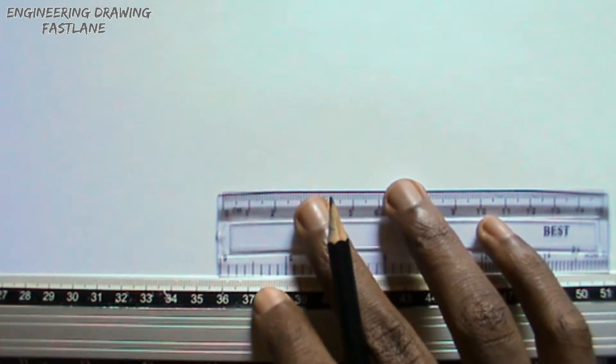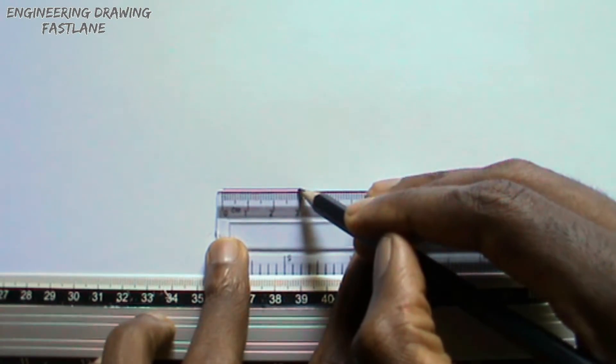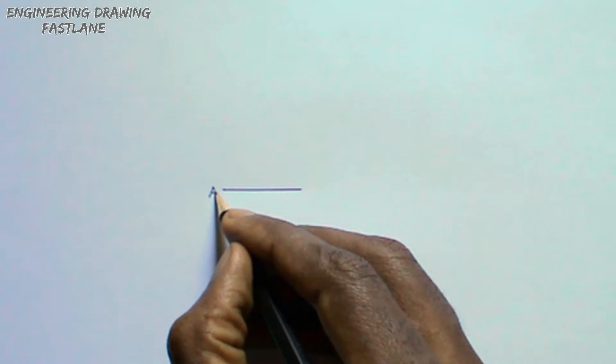Welcome. In this video, I will be showing you how to draw a regular pentagon if the length of the sides is given. The first step is to draw the given side and label it AB. I have already done this step.